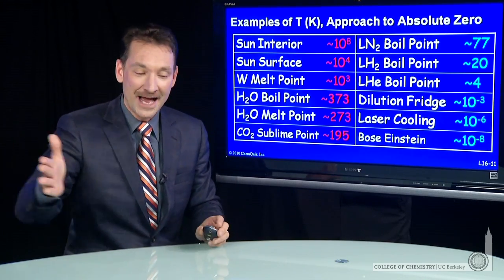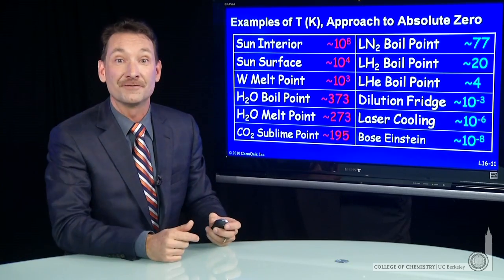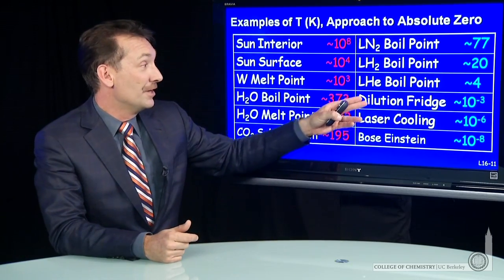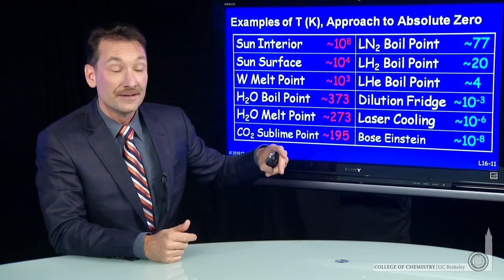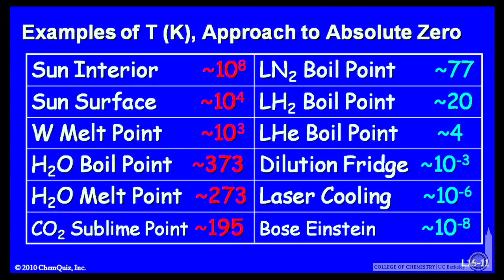So that's a gas that behaves ideally over a broad range of temperatures. Now, you can cool things below this 4 degree Kelvin mark, in a dilution refrigerator, a few thousandth of a degree.